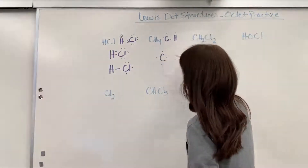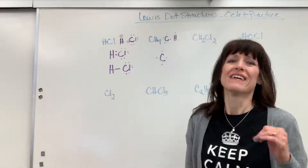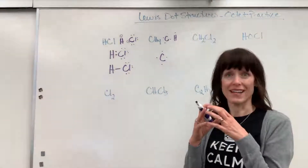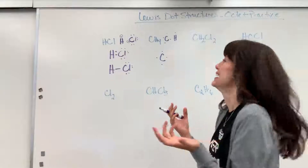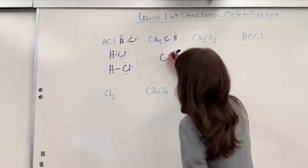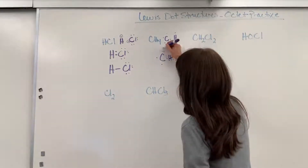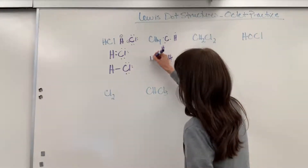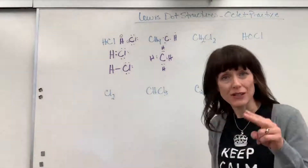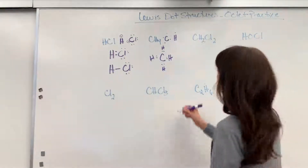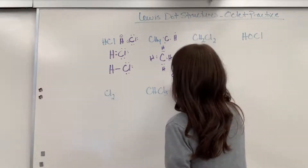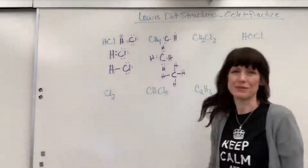Carbon has four valence electrons — one, two, three, four — and it needs four more to get to that octet. This is perfect: it can get those four electrons from the four hydrogens. Each hydrogen shares an electron with the carbon — top, right, left, and bottom. For every two electrons sharing, that's a bond, and so we end up with methane.